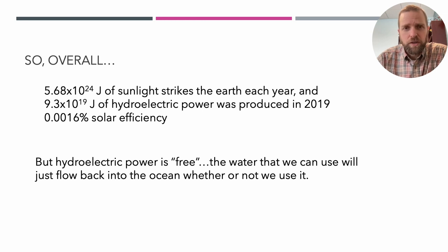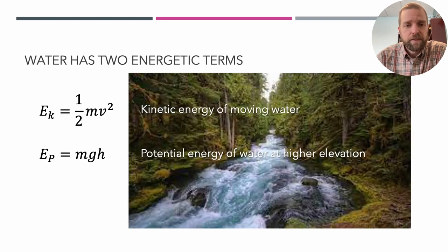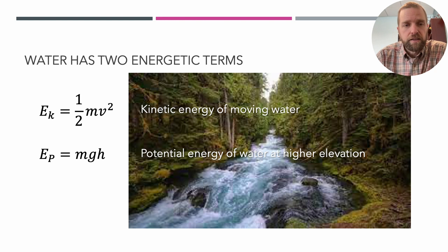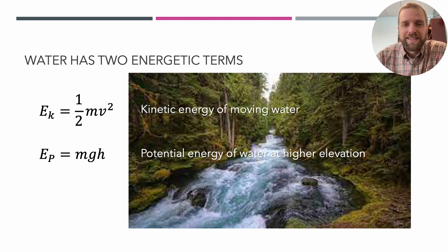We might as well take advantage of the potential energy that's there. Water has two energetic terms: the kinetic energy of moving water and the potential energy of water at a higher elevation. These follow standard physics definitions — kinetic energy is ½mv², and potential energy is mass times acceleration due to gravity times height.